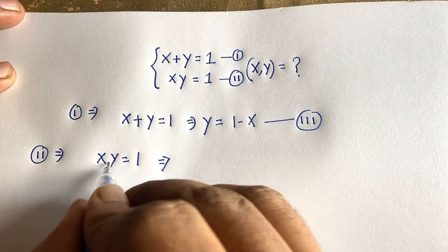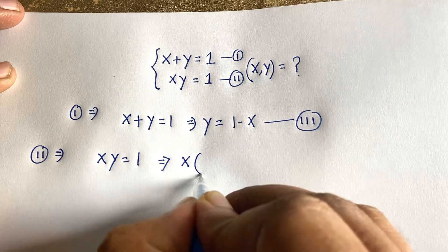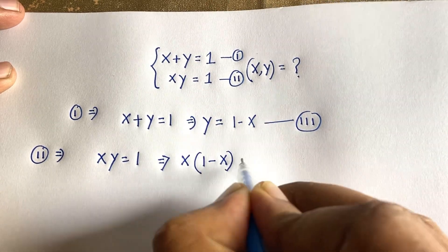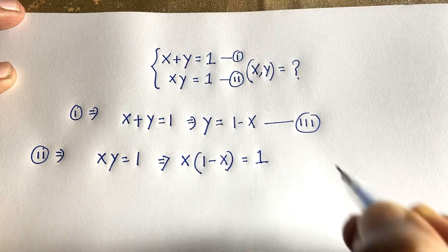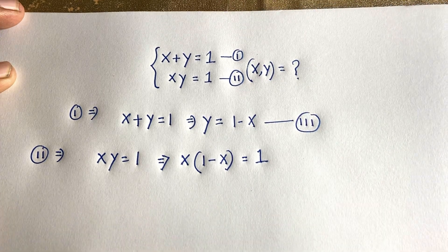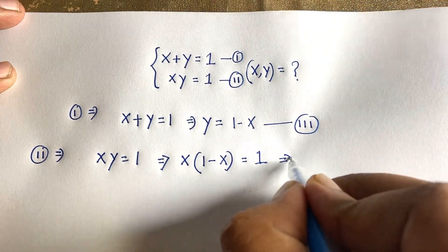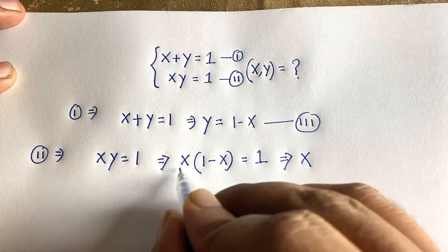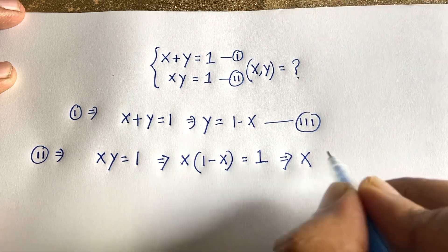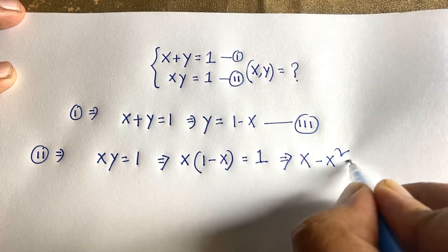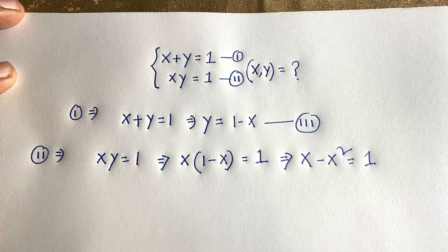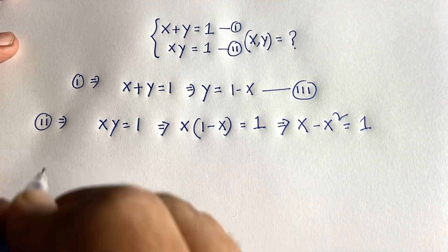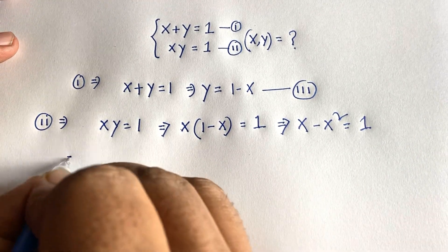Now, looking at our second equation, xy equals 1. If we substitute y equals 1 minus x into this equation, we get x times (1 minus x) equals 1. Expanding: x times 1 is x, and x times minus x is negative x squared, so x minus x squared equals 1.